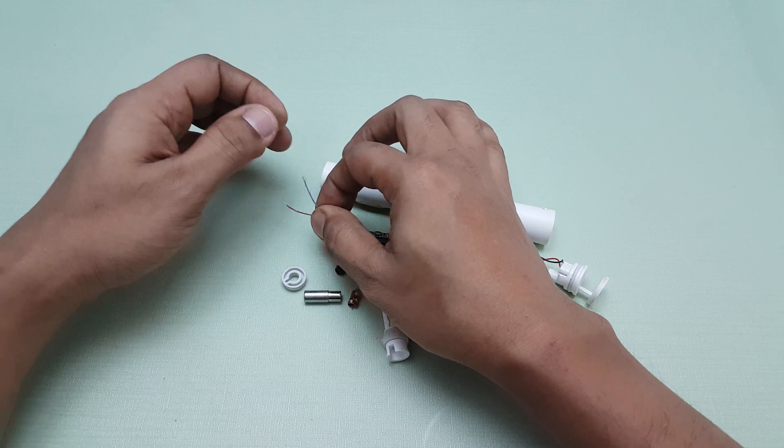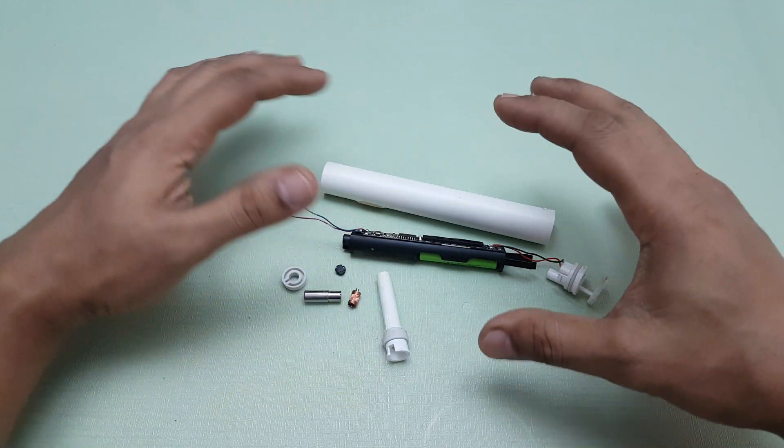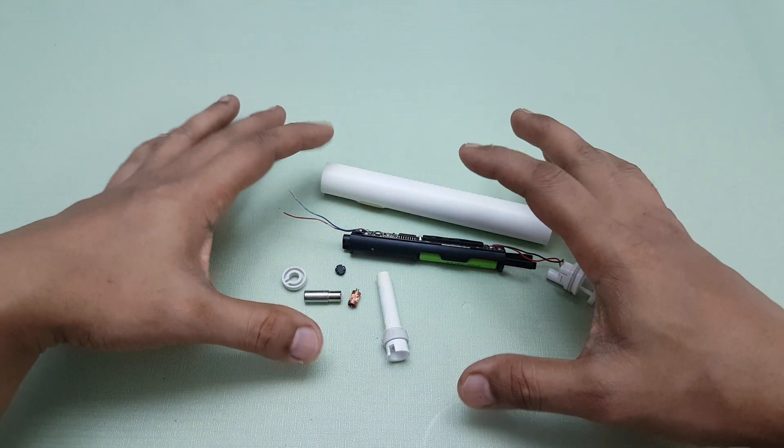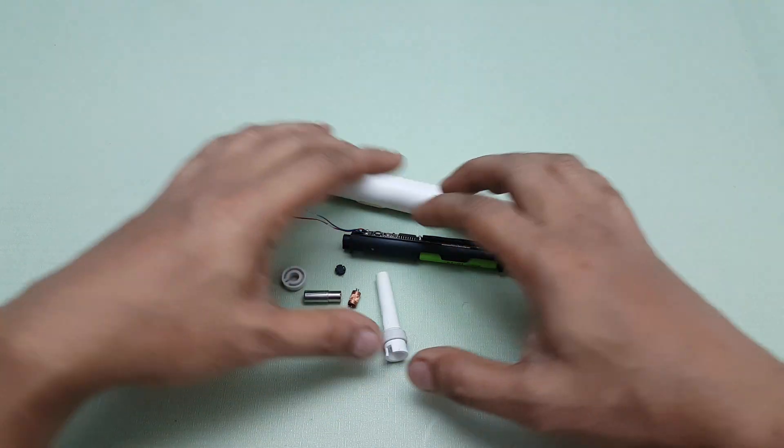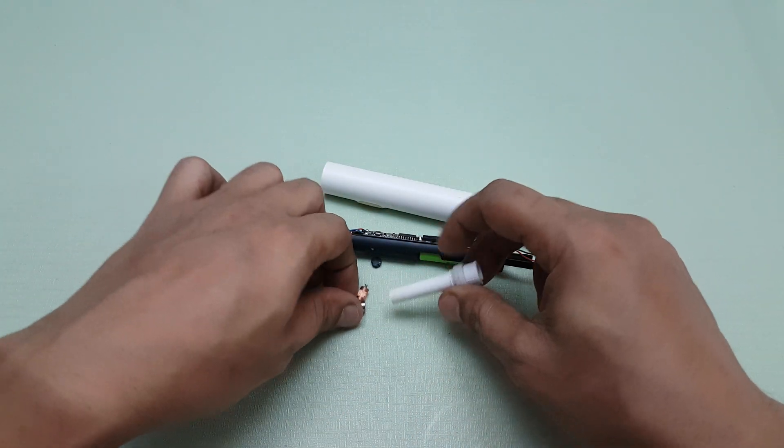Now that you've seen it from inside, let's talk about who should be buying this, what are the limitations and what you should be taking care of. One thing I've realized, the most delicate part of this entire toothbrush is the tip itself.